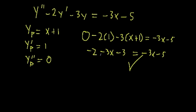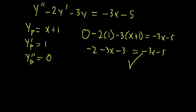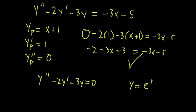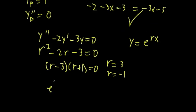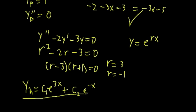To find the general solution, we also need the homogeneous case: y'' - 2y' - 3y = 0. We plug in y = e^(rx) to get the characteristic equation r² - 2r - 3 = 0, which factors as (r - 3)(r + 1) = 0. So the roots are r = 3 and r = -1, giving solutions e^(3x) and e^(-x). The general homogeneous solution is y_h = c_1 e^(3x) + c_2 e^(-x).